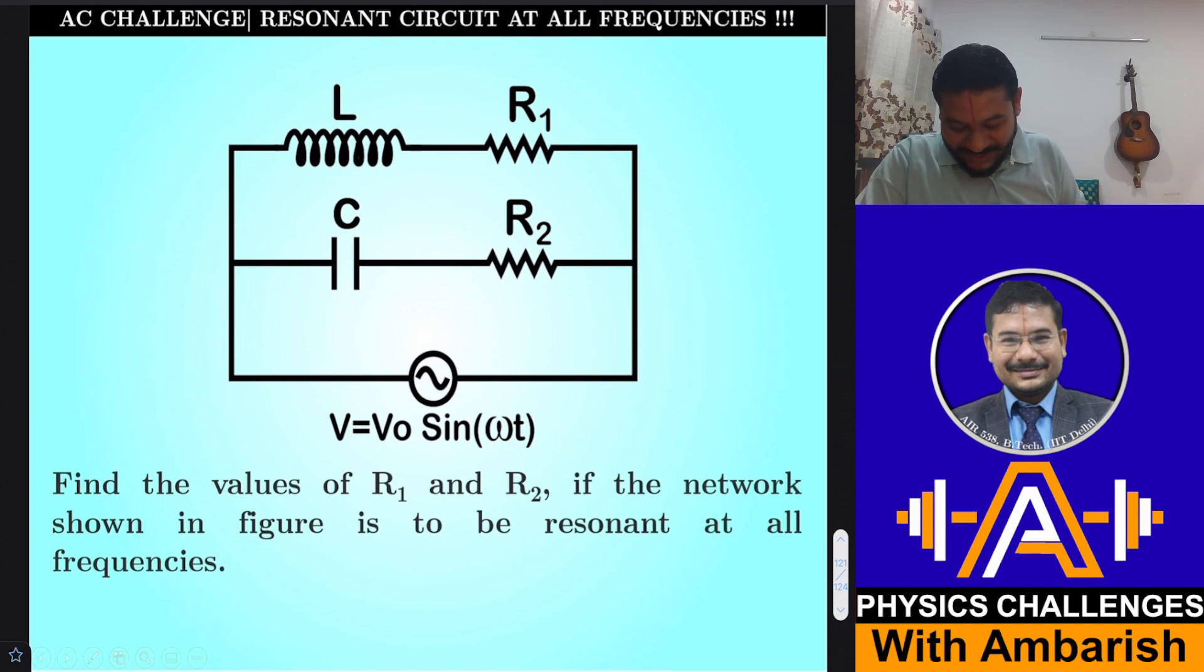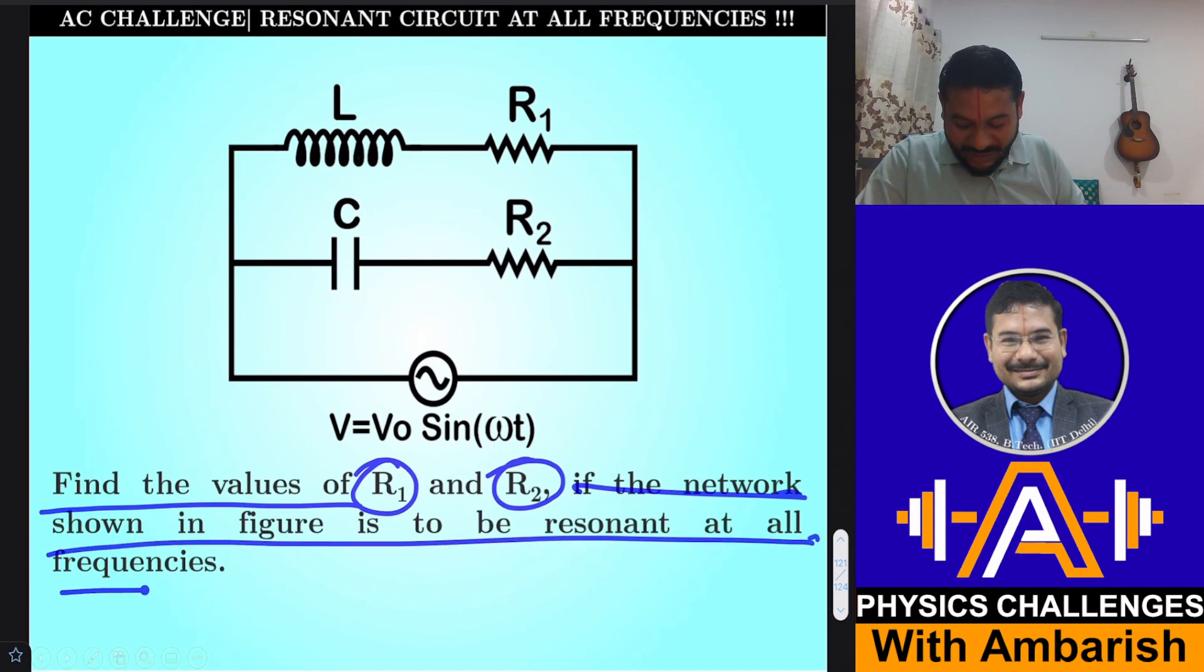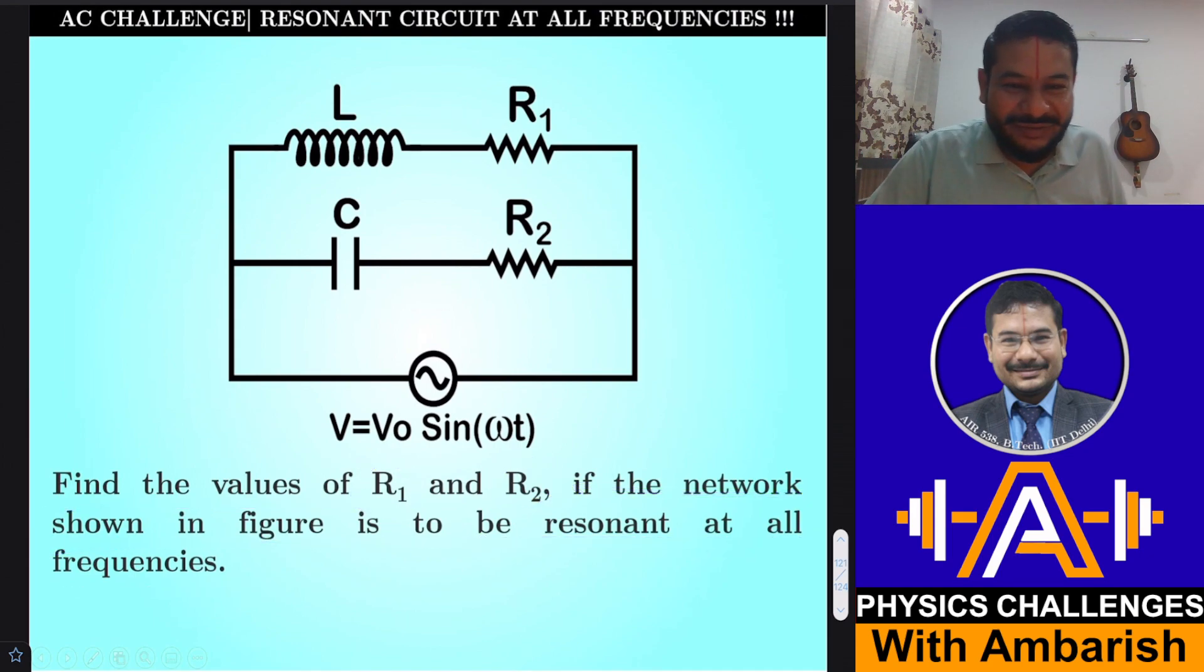So let me formally read out the question. Find the values of R1 and R2 if the network shown in the figure is to be resonant at all frequencies. So all of us have seen networks which are series networks. They are resonant at 1 by root LC. Similarly, we find resonance frequency of so many circuits.